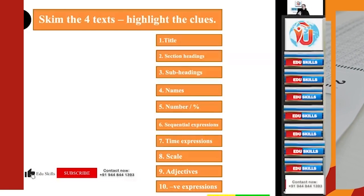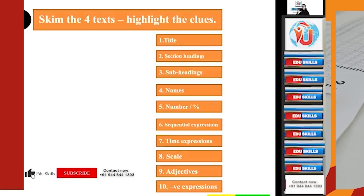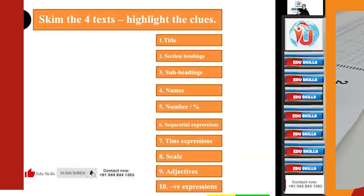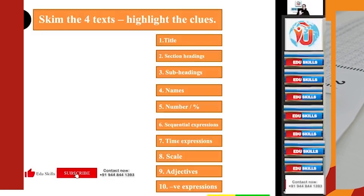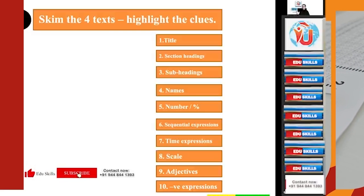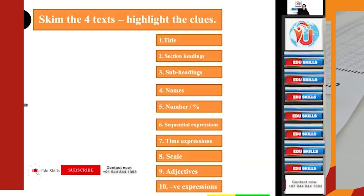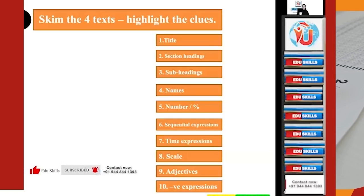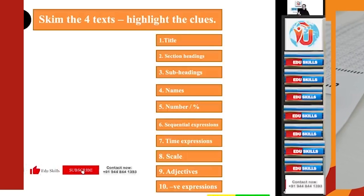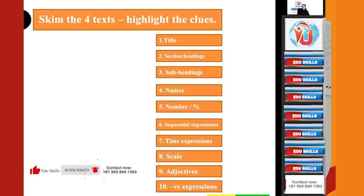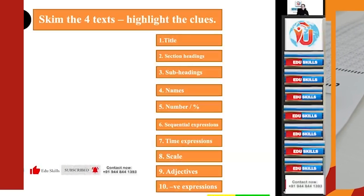As you skim through, you look for the title — for example, 'Paracetamol Overdose' — then section headings. The four texts each have four headings. Then subheadings: under every text there will be subheadings, underline those. Identify names of medicines, organs, instruments, tests, therapies, or viruses. Then identify numbers or percentages, sequential expressions, time expressions, scale adjectives, and negative expressions.